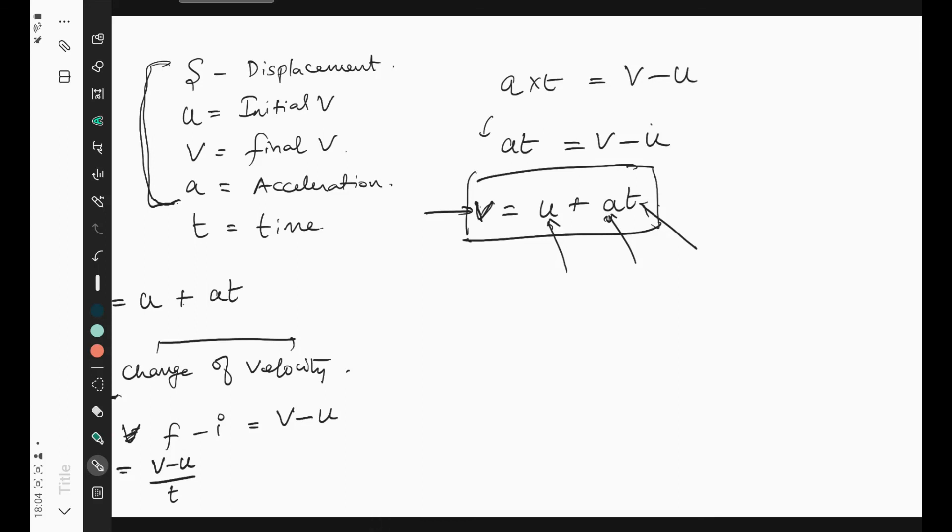Let us try it for one standard case where the initial velocity is zero. If the body starts from rest and then reaches a final velocity of v at time t under constant acceleration a, then v equals a times t. We saw that v equals u plus at. Here u is zero, so we get v equals zero plus at, which equals a times t.